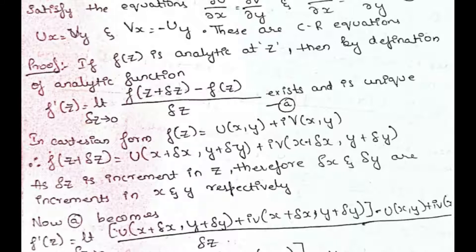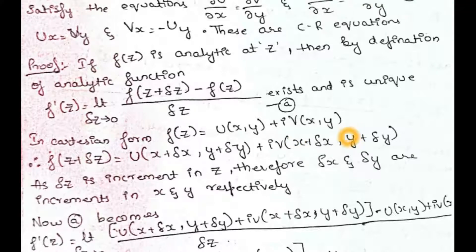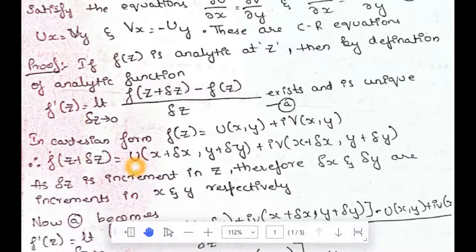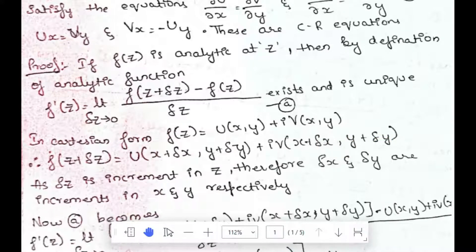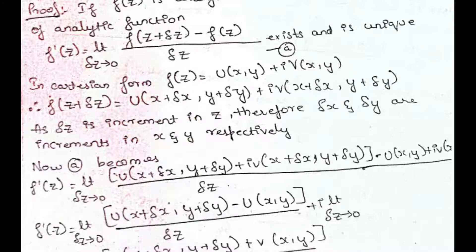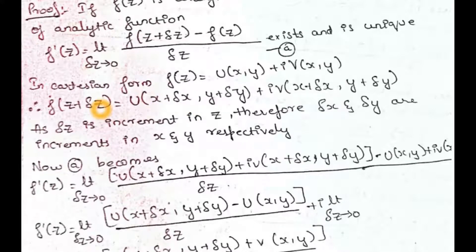We define f(z) = u(x, y) + iv(x, y). For f(z + δz), we add the extension δx and δy in place of x and y, giving f(z + δz) = u(x + δx, y + δy) + iv(x + δx, y + δy). Since δz is an increment in z, δx and δy are increments in x and y respectively.